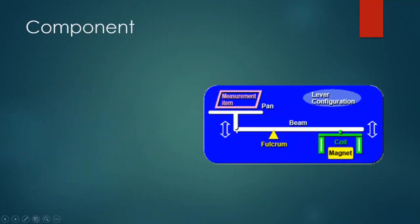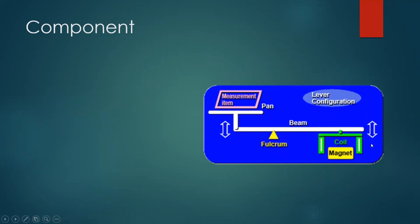The mechanism: a fulcrum supports a beam connected to the pan where the item to be measured is placed. On the other end of the beam, there is a coil, a magnet, and an electromagnet, which increases or decreases the counterpoise weight based on the current passing through it. The weight on the pan determines the current generated. When the current applied becomes equal to the load, the fulcrum is level and the reading is taken.